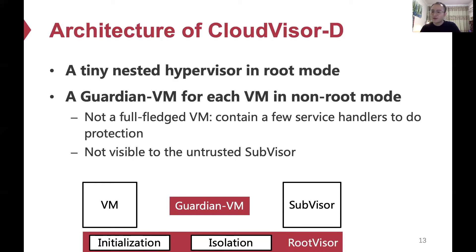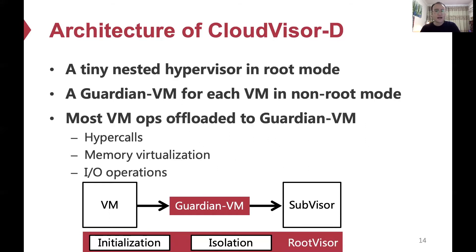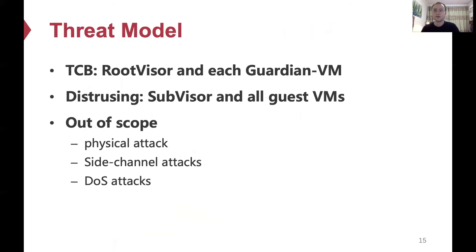Thus, the Guardian VM consumes a very small number of resources. The Guardian VM is responsible for forwarding and checking most virtual machine operations in non-root mode without causing any VM exits — such as hypercalls, memory virtualization operations, and I/O operations. The root visor is occasionally awakened to handle some inevitable VM exits in root mode, such as external interrupts. The trusted computing base (TCB) of CloudVisor-D includes the root visor and each Guardian VM. It distrusts the sub-visor and all guest virtual machines. We also do not consider physical attacks, side-channel attacks, and DoS attacks in our threat model.